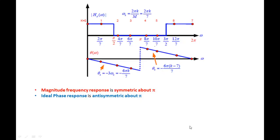Finally, note that the magnitude response of this FIR filter is symmetric about π, as seen in our example. The phase response, however, is anti-symmetric about π — it varies in a linear fashion but is anti-symmetric at the point π. Thank you, students.